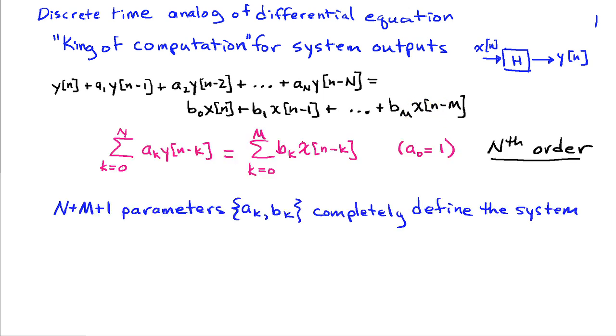We can write this in general form as a sum from k equals 0 to n of a_k y[n-k] equals the sum k equals 0 to m of b_k x[n-k]. It's conventional to assume that a0 equals 1, and this is an nth order difference equation describing this particular system.